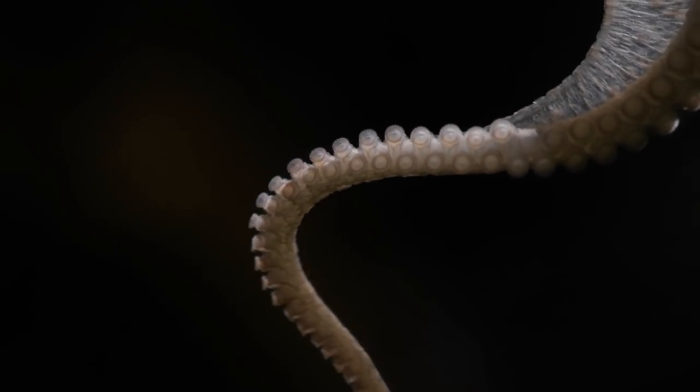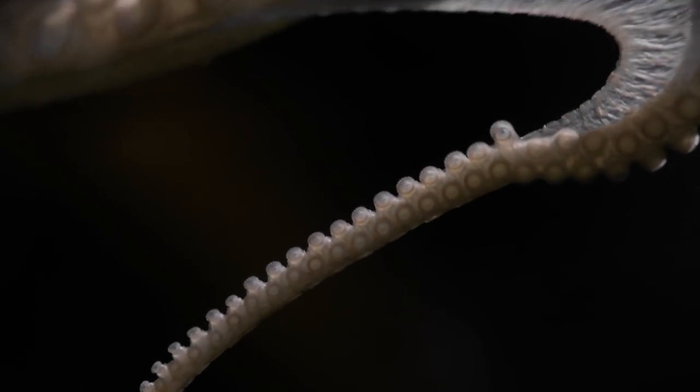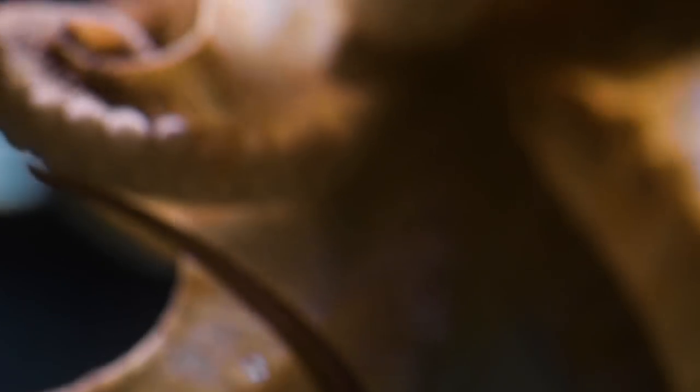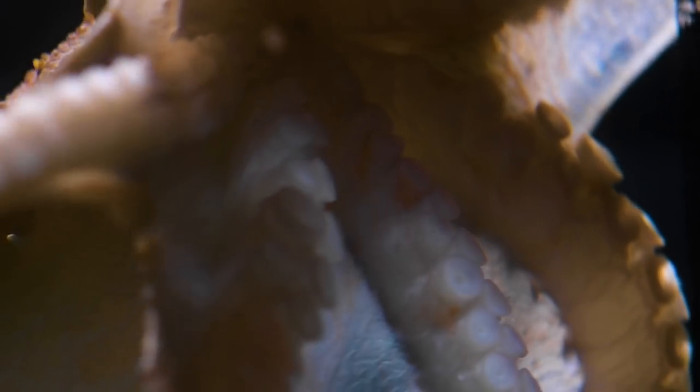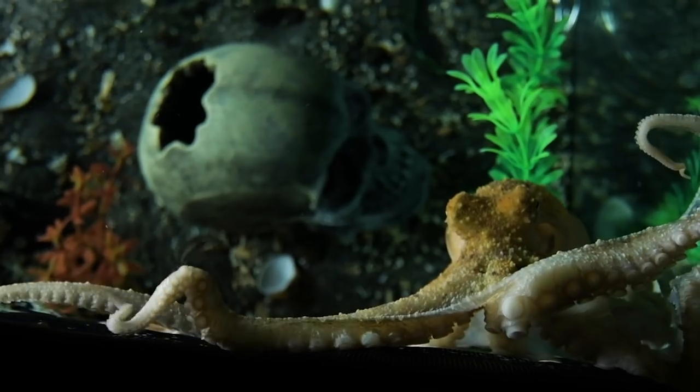There's an extreme density of chemoreceptors in the suckers of the octopus. They literally can smell and taste with their arms. So it seems like the way the octopus deals with having eight independent arms and having to process all of that sensory information is that it has located a lot of the sensory processing as close as possible to the external world.